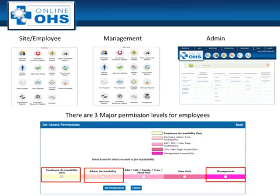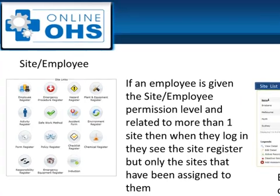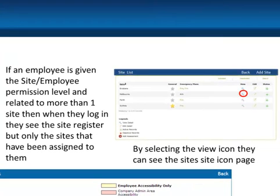If you are an employee, you have been given the Site Employee Permission Level. So when you log into the system, you will see the Site Icon page for the site that you have been related to. If you work at more than one site, then when you log in you will see the Site Register, but only the sites that you have been assigned to. By selecting the View icon, you can see the Site Icon page.